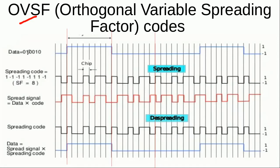For example, this is the data we are going to send: 0, 1, 0, 0, 1, 0. This means that here I have 1, here I have 0, here I have 0, here I have 1, and then I have a 0. So this is the data that I want to send.